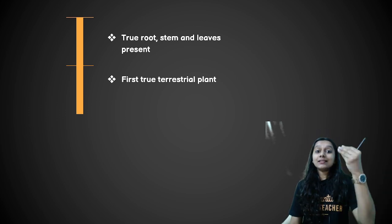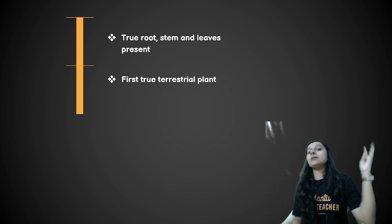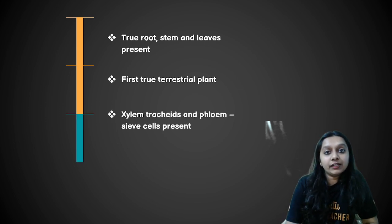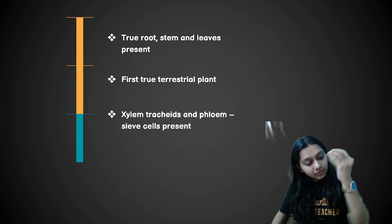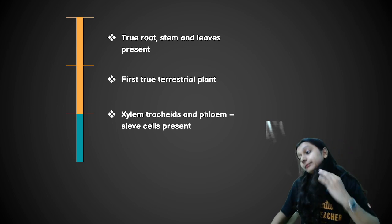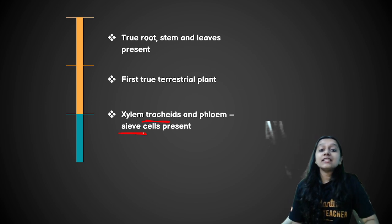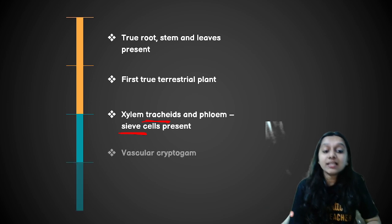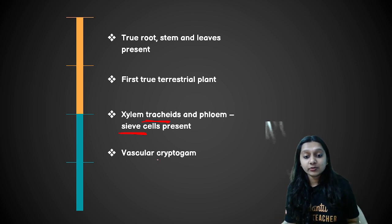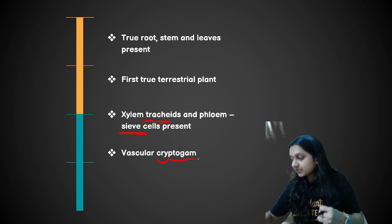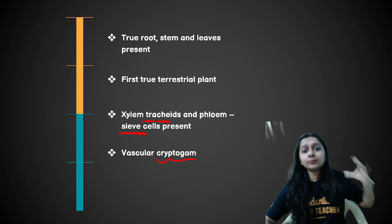Pteridophyta is the first terrestrial plant — the first plant with root, stem, and leaf that can grow on the ground. It is also the first plant to have Xylem and Phloem, making it the first Tracheophyte on Earth. In Xylem, tracheids are present; in Phloem, sieve cells are present. This makes it a vascular plant. Among cryptogams, algae and bryophytes are non-vascular, but Pteridophyta is vascular — it is the only vascular cryptogam.